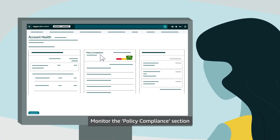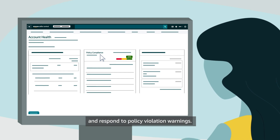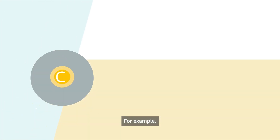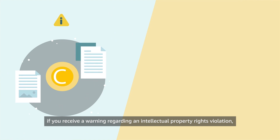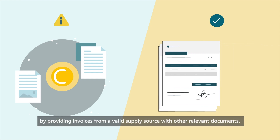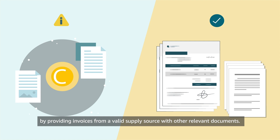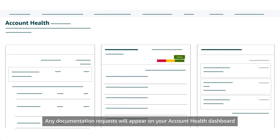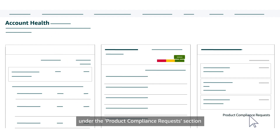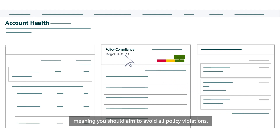Monitor the policy compliance section of your account health dashboard regularly and respond to policy violation warnings. For example, if you receive a warning regarding an intellectual property rights violation, you might follow the appeals process by providing invoices from a valid supply source with other relevant documents. Any documentation requests will appear on your account health dashboard under the product compliance request section. Your policy compliance target should be zero, meaning you should aim to avoid all policy violations.